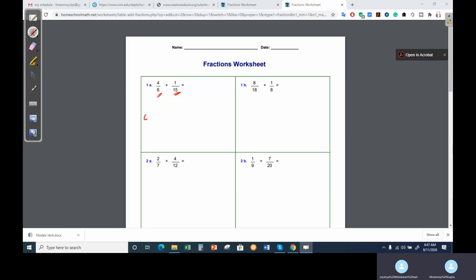You have to find the LCM of 6 and 15. 3 times 2 is 6, 3 times 5 is 15. The LCM will be 3 times 2 is 6, 6 times 5 is 30. So your LCM is 30.